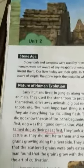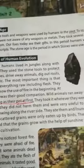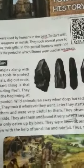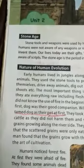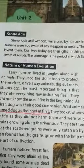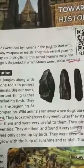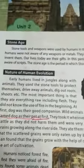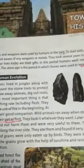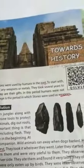Later, they started rearing cattle as they did not harm them and were very useful to them. They observed some grains growing along the riverside. They ate them and found it very tasty. Did you understand students? Okay, thank you.